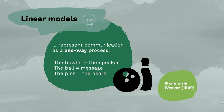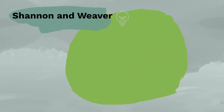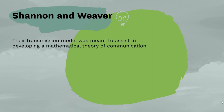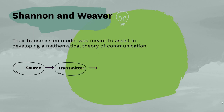An example model here would be that of Shannon and Weaver, developed in 1949. Shannon and Weaver were engineers who introduced a transmission model to assist in developing a mathematical theory of communication. Their model consisted of six elements: an information source, which produces a message; a transmitter, which encodes the message into signals; a channel, to which signals are adapted for transmission; and a signal.